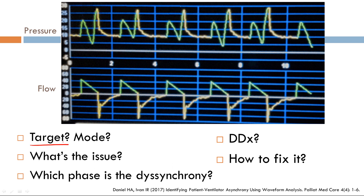So what's the target variable? Taking a look at my flow scalar, I can see that it looks like a decelerated ramp. That's something the operator has set. So therefore, I can say that flow is my target variable. As a result, this mode of ventilation is volume control ventilation.